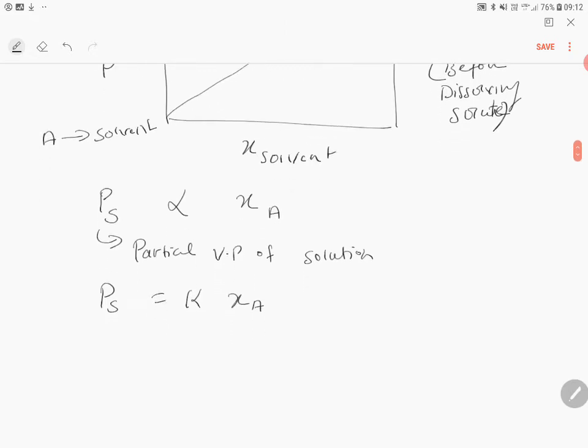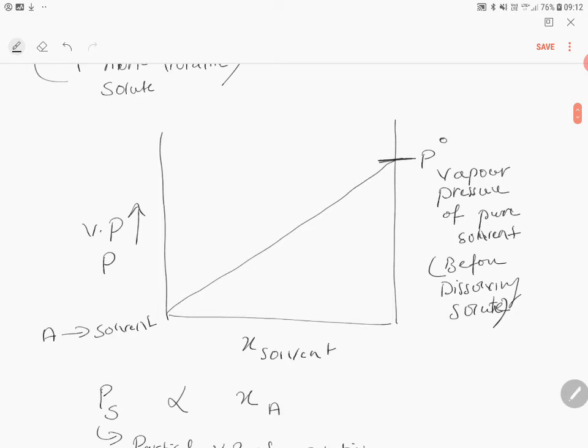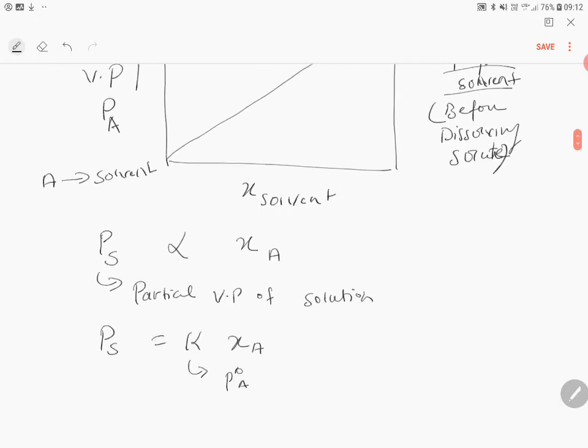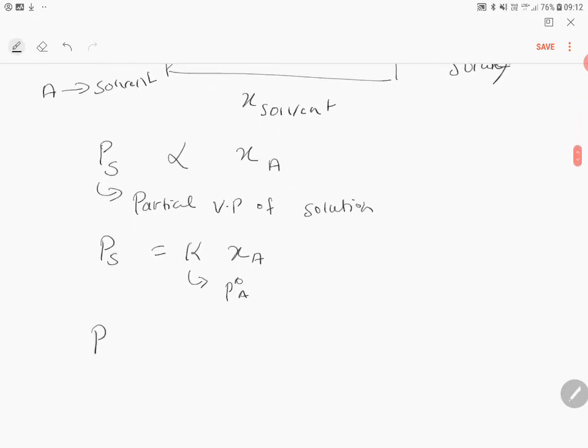In order to replace this proportionality constant, Raoult suggested this is P°A, vapor pressure of the pure solvent. Therefore we can say PS equals P°A times XA. This is like y equals mx.